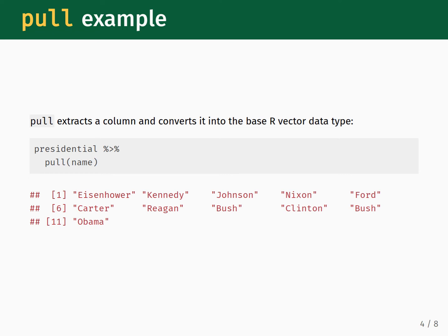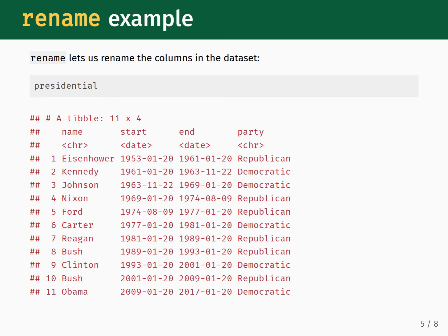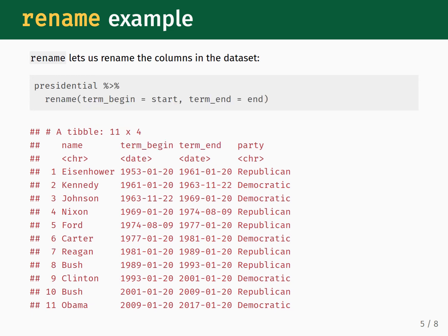Next, let's look at how the rename function works. This lets us rename the columns in a dataset. Here we see the original version of the presidential dataset for reference. Now, let's apply the rename function. We pipe presidential into rename. We rename the start column as term_begin and the end column as term_end. Note that the new name goes on the left side of the equal sign, and the old name goes on the right side of the equal sign. Looking at the output, we now see that the start and end columns have been renamed to term_begin and term_end.